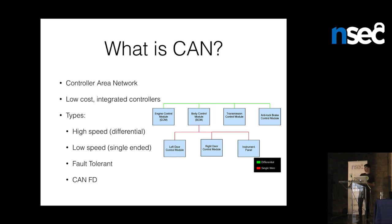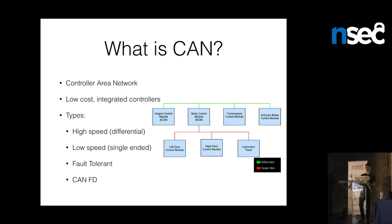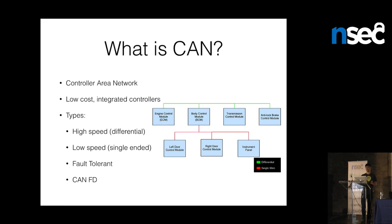The setup in a car looks something like this: you have multiple different buses chained off of each other. For example, you might have a high-speed network with your engine control, transmission, body control, anti-lock brakes — things that you really care about. Then one of the controllers will act as a gateway, almost like a router, to send messages back and forth to a separate bus for lower-priority things like your instrument cluster and door control modules. There really are this many controllers in cars nowadays — they pretty much are computers. There's no mechanical linkage between the pedal on a modern car and the engine; it's all electronics.